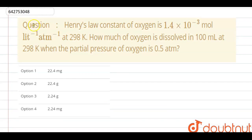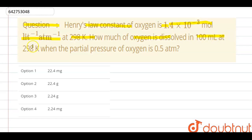Hello students. So the question is: Henry's law constant of oxygen is 1.4 × 10⁻³ mol per litre per atmosphere at 298 Kelvin. How much oxygen is dissolved in 100 ml at 298 Kelvin, when the partial pressure of oxygen is 0.5 atmosphere?